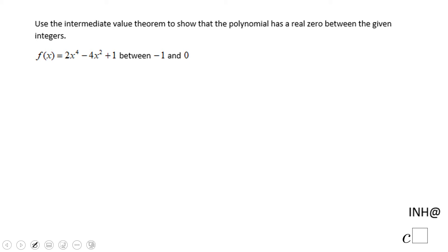Welcome or welcome back to I Need Help at C-Squared. In this example, we have a polynomial function and we are asked to use the Intermediate Value Theorem to show that this polynomial has a real zero between the given integers of -1 and 0.